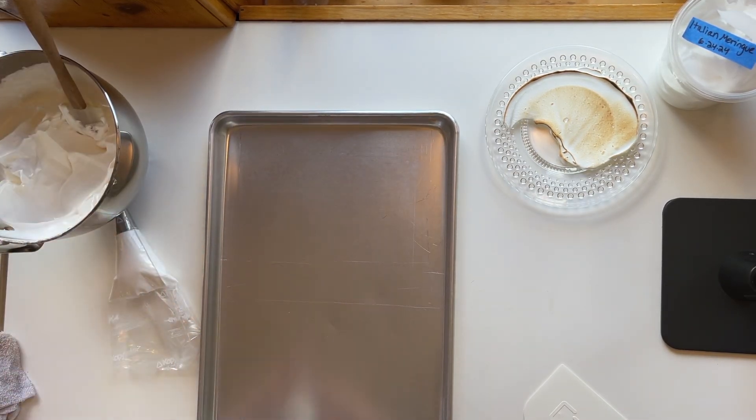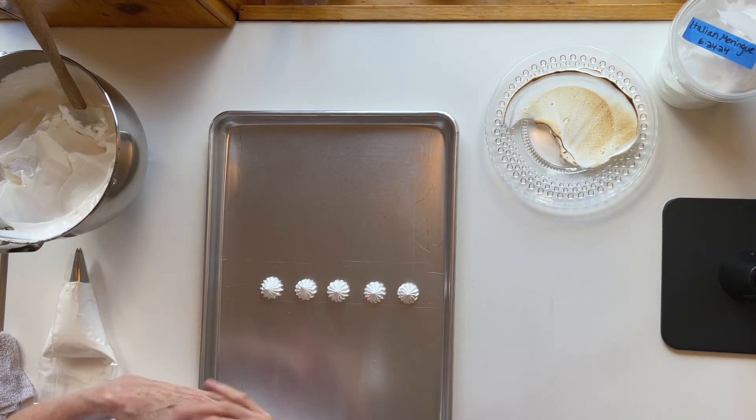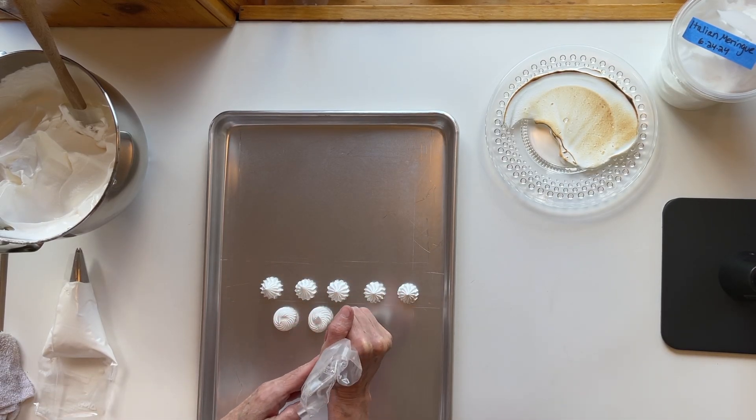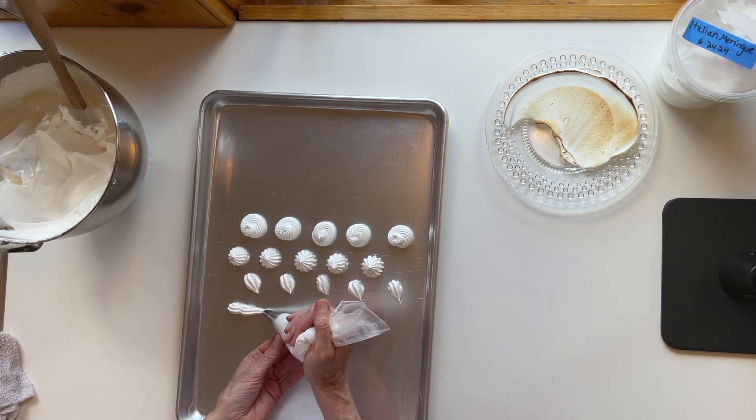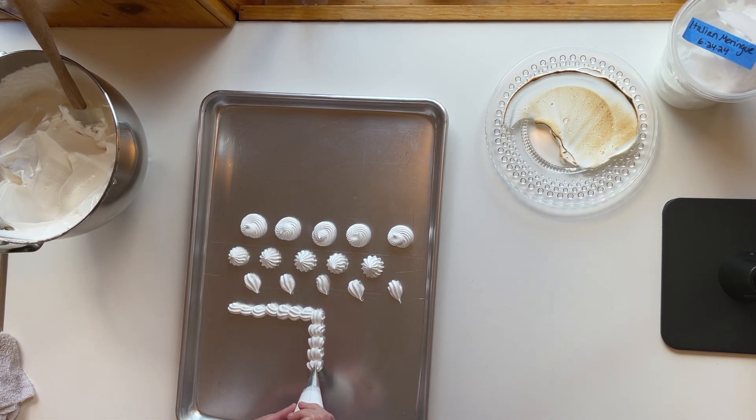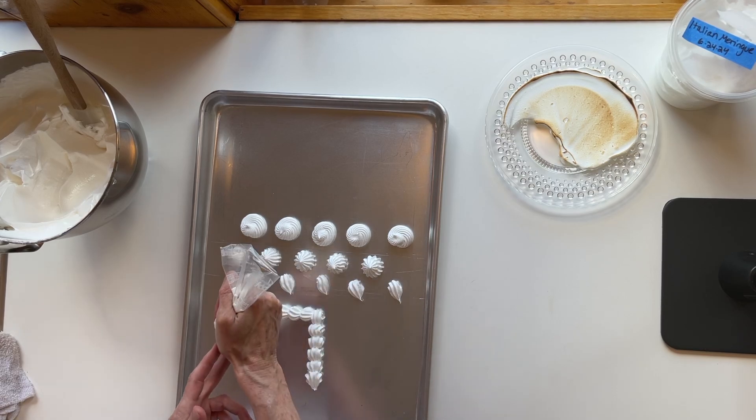It won't weep, it won't separate. It's really the best one—if I had the option, I would never use any other. The Swiss is a warm meringue, the French has no heat applied to it, and the Italian's the hottest.